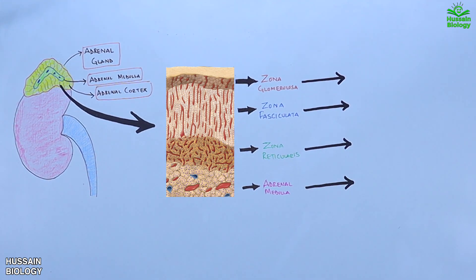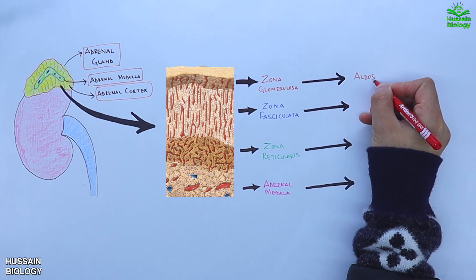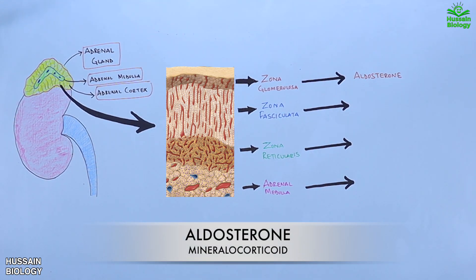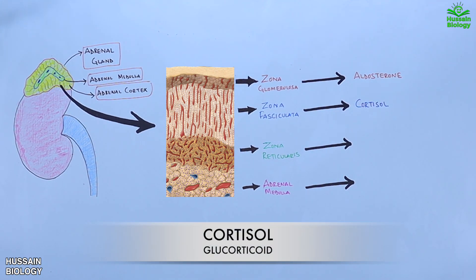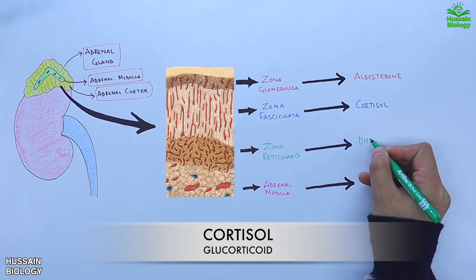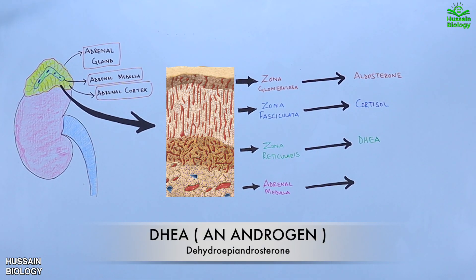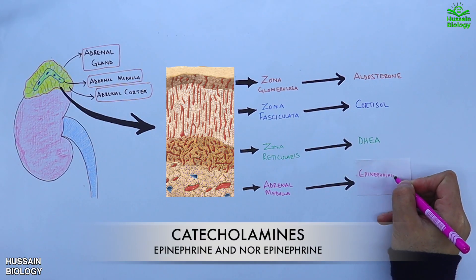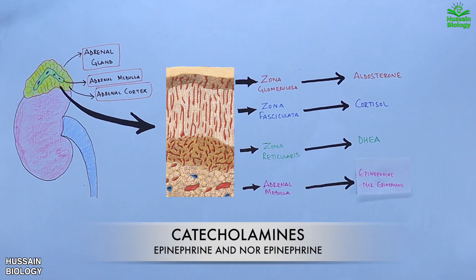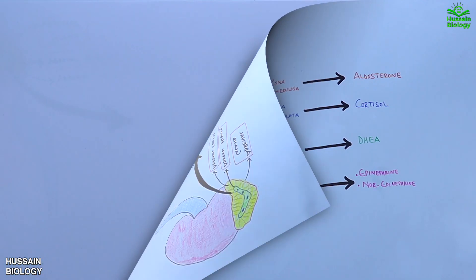Now let's look at the hormones from each respective layer. From the first layer, zona glomerulosa, we get aldosterone. From the second layer, zona fasciculata, we get cortisol. From the third layer, zona reticularis, we get DHEA. And from the fourth layer, the adrenal medulla, we get epinephrine and norepinephrine.